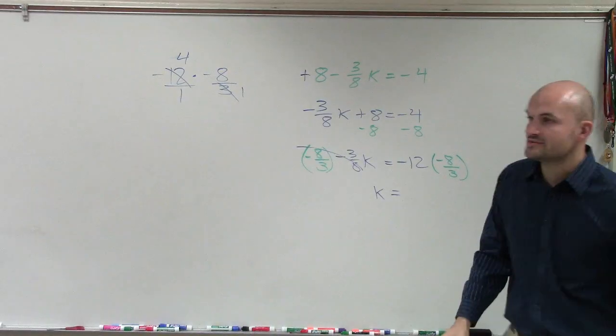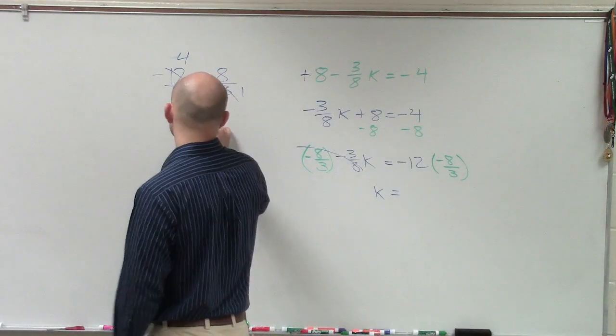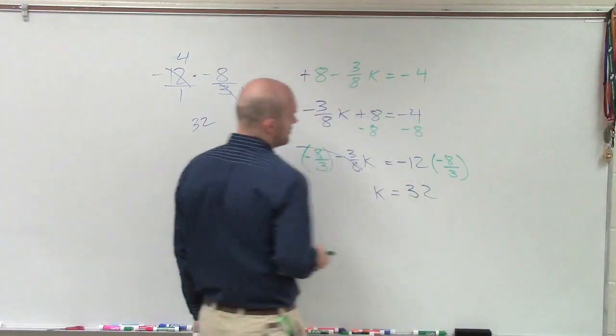So therefore, I have negative 4 times negative 8, which is a positive 32. So therefore, k equals 32.